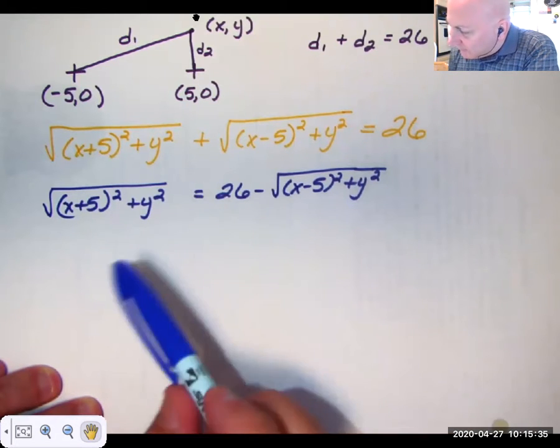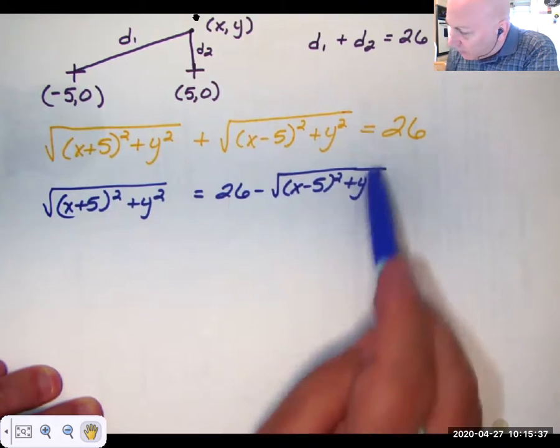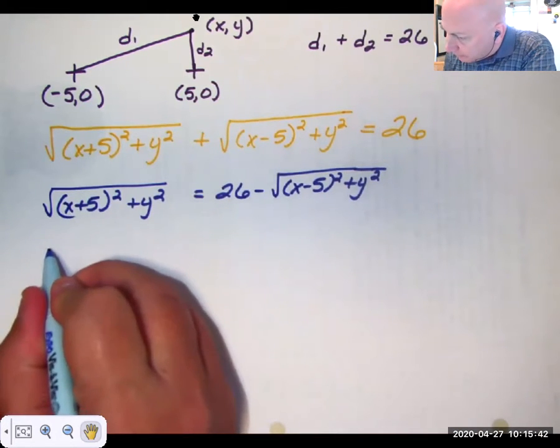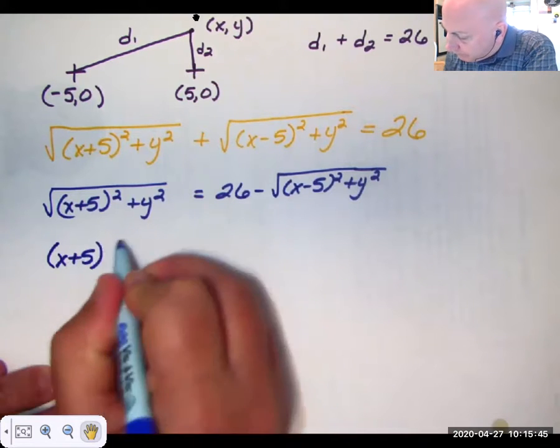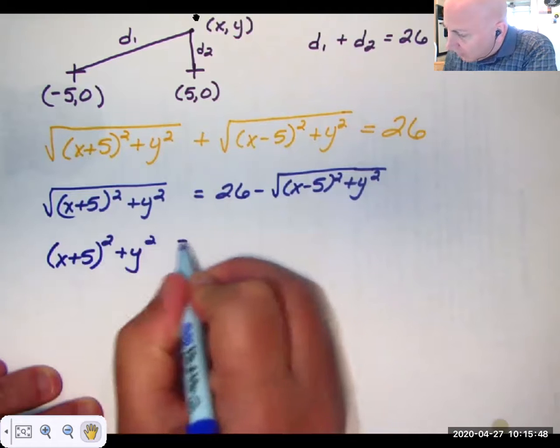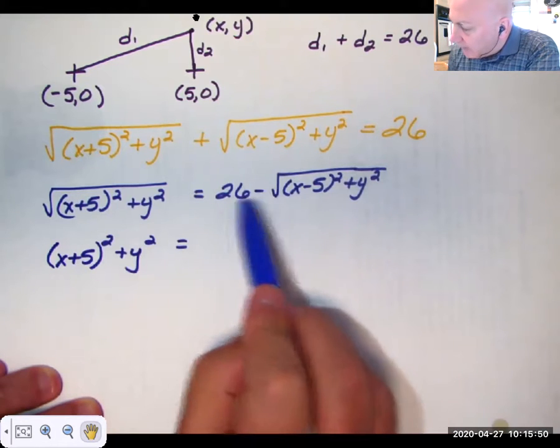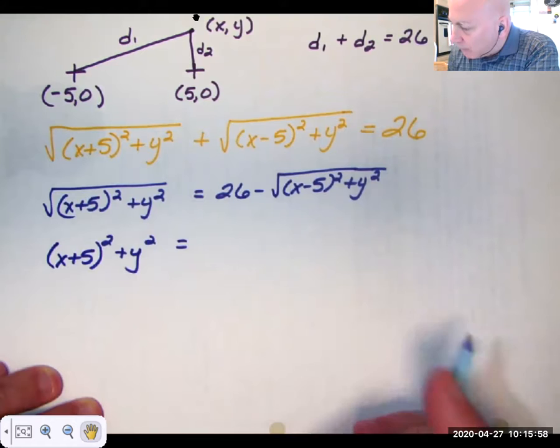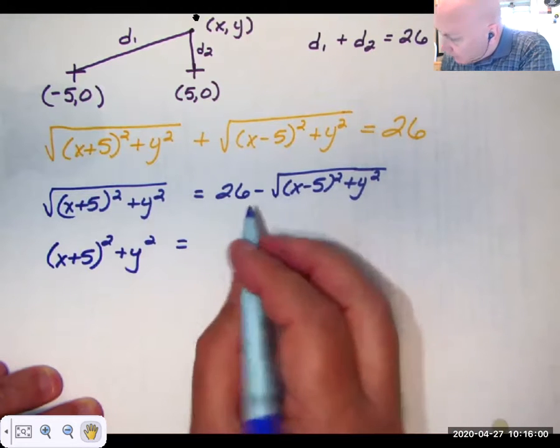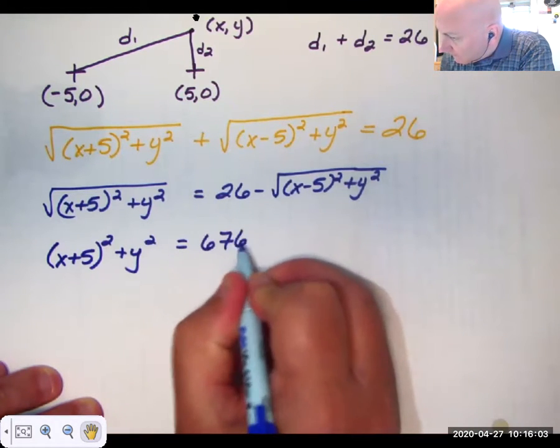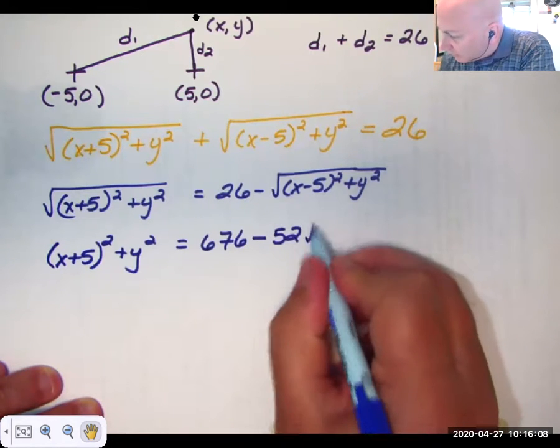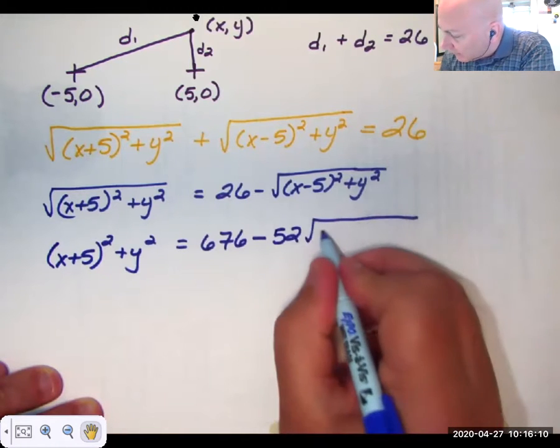Now I'm going to square both sides of the equation. Watch carefully what happens over here. When I square this side, the radical goes away. But here, this is like a minus b, and I have to square that. So it's actually going to be a perfect square trinomial. I have to foil that. And I'll just cut to the chase here on when you simplify it after foiling it, this is what you get.